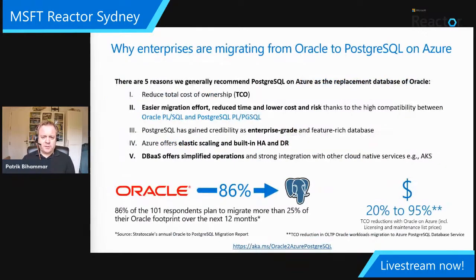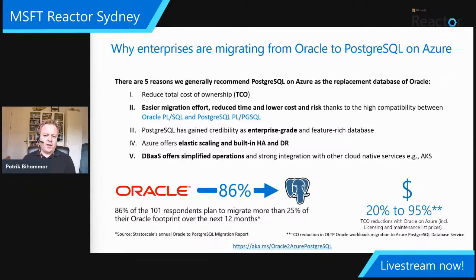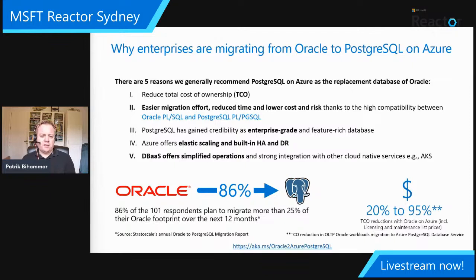Why has Postgres become the favorite for Oracle migrations? Cost is the number one starter — how can I reduce my footprint and improve my licensing position? But also to get those cloud-ready capabilities. The real killer reason is that schemas, stored procedures, and the database language between Oracle and Postgres are much more similar than moving from PL/SQL to T-SQL. Moving from PL/SQL to Postgres PL/pgSQL means lower migration effort, less time, and reduced risk.